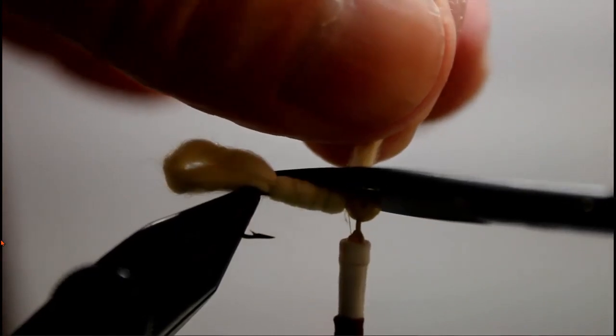Now trim the excess yarn off close and then proceed to build a nice, neat collar on the head of the fly.